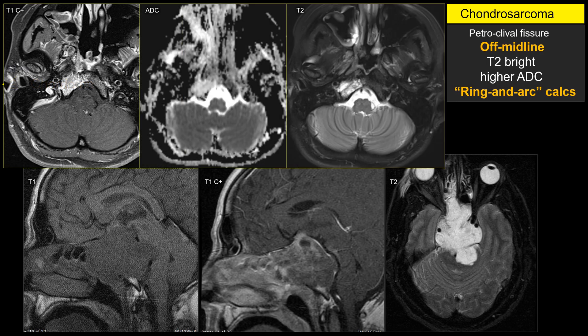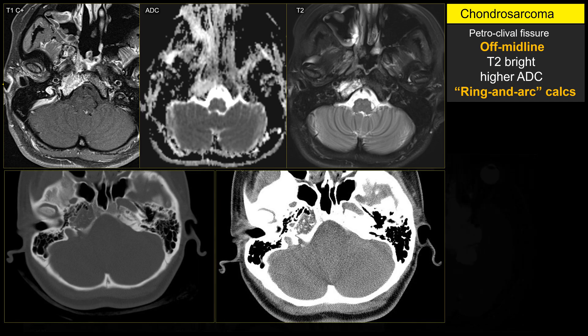An example of chondrosarcoma in a relatively young patient: on T1-weighted image you can see heterogeneous enhancement — in this case relatively avid. On T2-weighted sequence, notice that chondrosarcoma, just like chordoma, is relatively bright on T2. If you have CT, it is very helpful — you can see the classic ring-and-arc calcification, which is better for chondrosarcoma. So this case: eccentric, bright T2, ring-and-arc calcification — that is chondrosarcoma instead of chordoma.